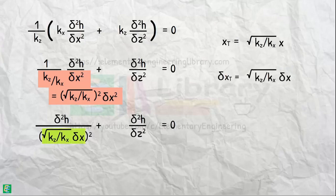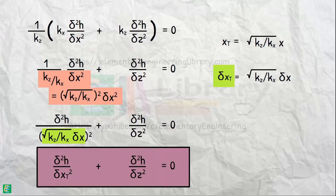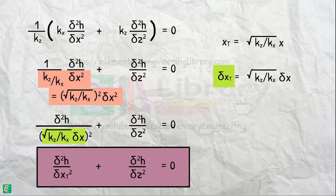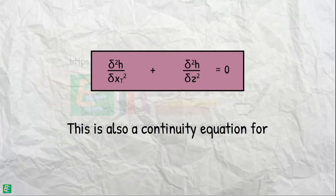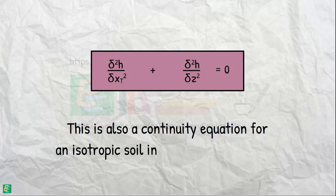So, let us write this equal to dxt. And with it, our equation becomes the Laplace equation in xtz plane. This is also a continuity equation for an isotropic soil in a fictitious xtz plane.